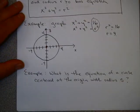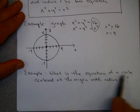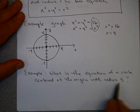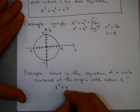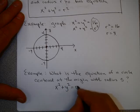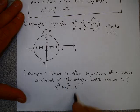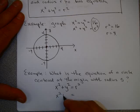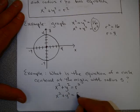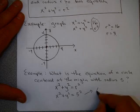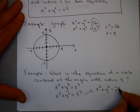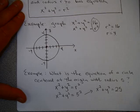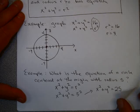Let's do another problem where you find the equation of a circle. What is the equation of a circle centered at the origin with radius 5? You know that the equation of a circle centered at the origin is x squared plus y squared equals r squared, where r is the radius. So that's x squared plus y squared equals 5 squared, or x squared plus y squared equals 25. Circles are a pretty easy conic section.